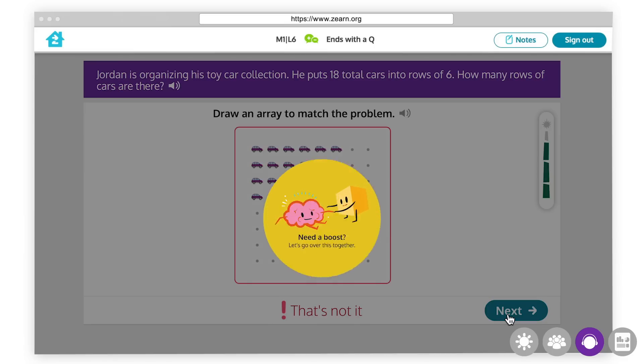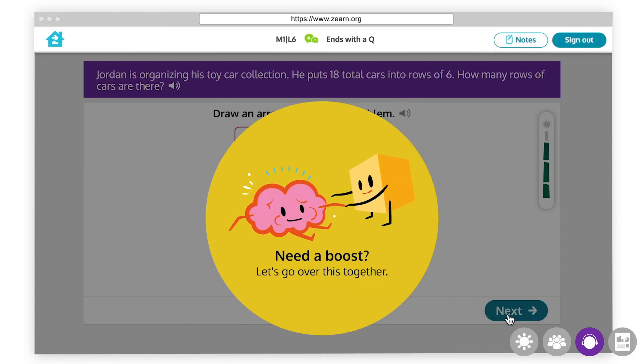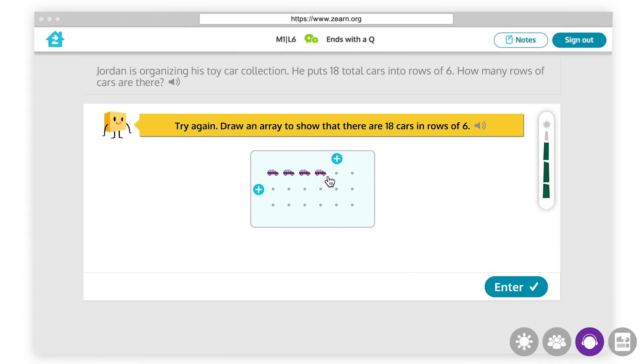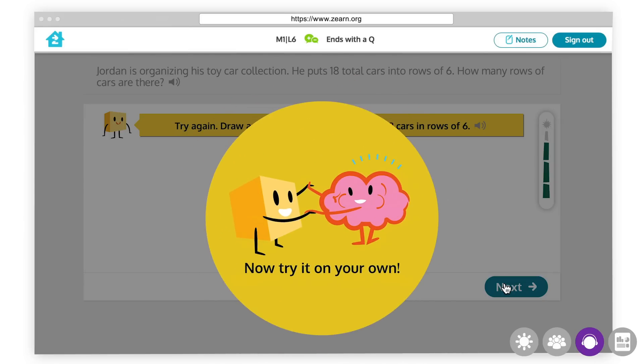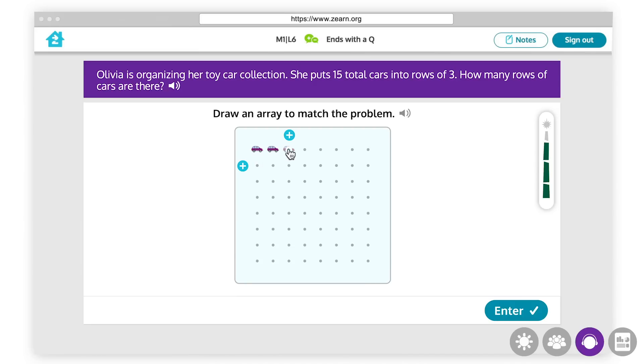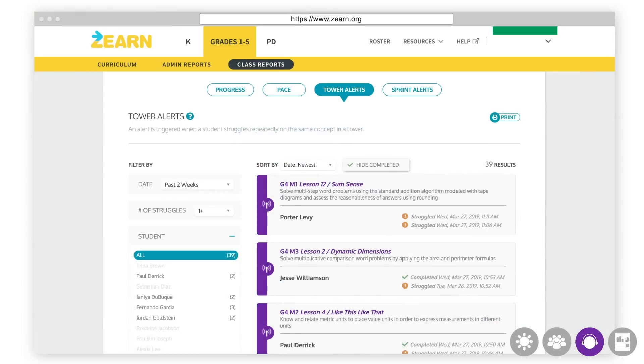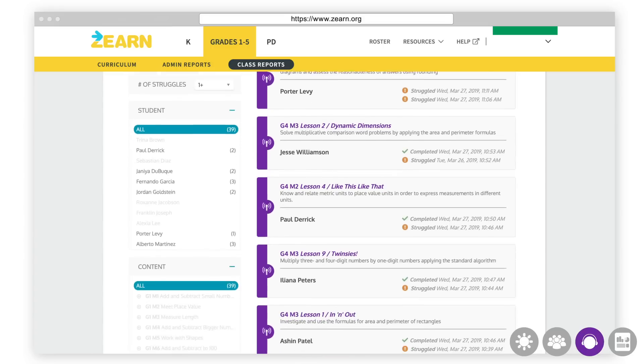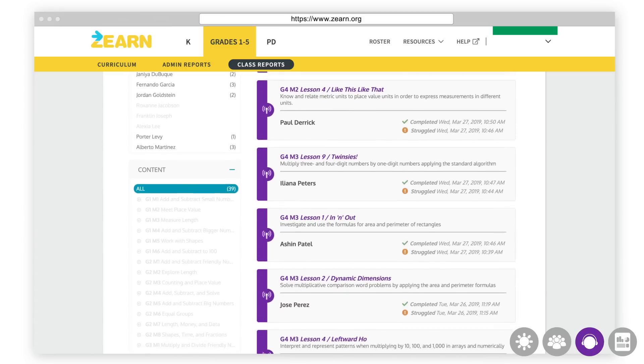If students get any part of a problem wrong during a digital lesson, they get personalized, embedded remediation that provides just the right amount of support. Remediation support breaks down the question into smaller steps, with more supportive manipulatives that allow students to understand and correct their mistakes. Then, students demonstrate understanding on a new problem. If students continue to struggle after multiple remediation paths, teachers are alerted in class reports and have precise visibility into where students need differentiated support.